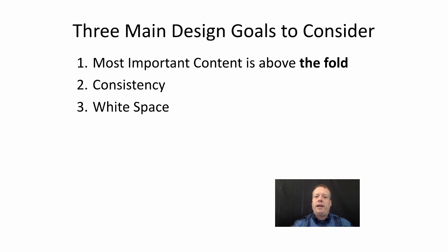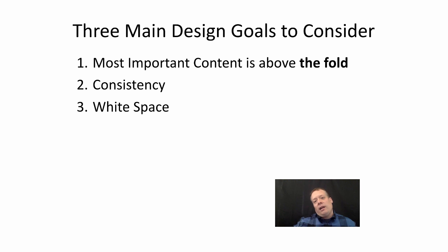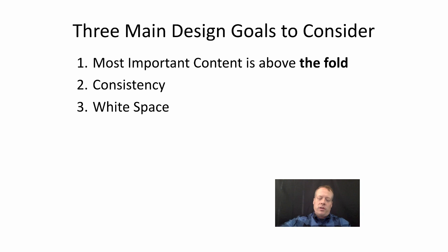There are three main design goals to consider when designing your web and app. First is to put your strategic content — your most important content — in the place that's going to be most visited by users. Usually that just means above the fold. The fold is the imaginary line on a web page below which the average user has to scroll to see content. From a mobile device, it's the first thing you see when you bring the page up, and then you have to scroll to see additional content.